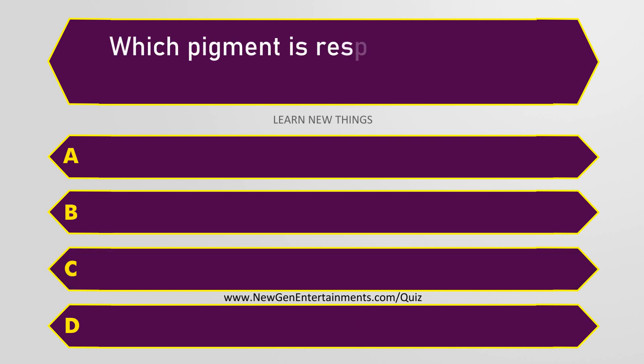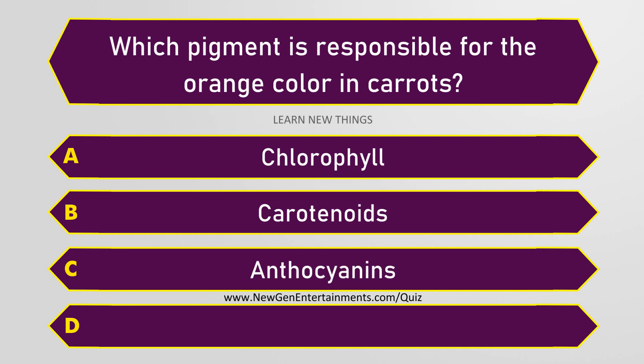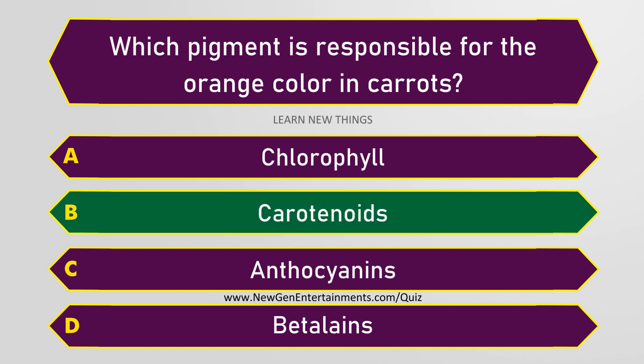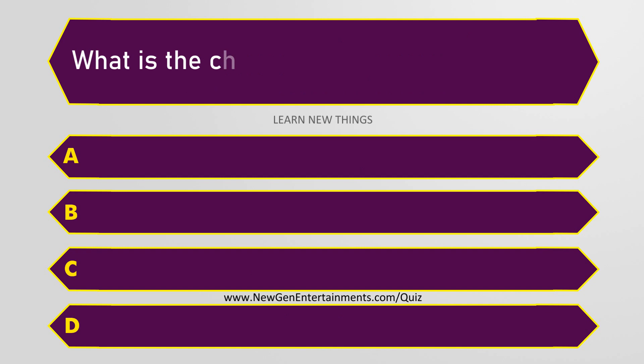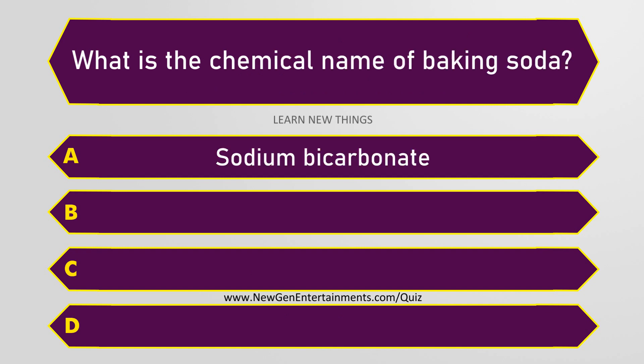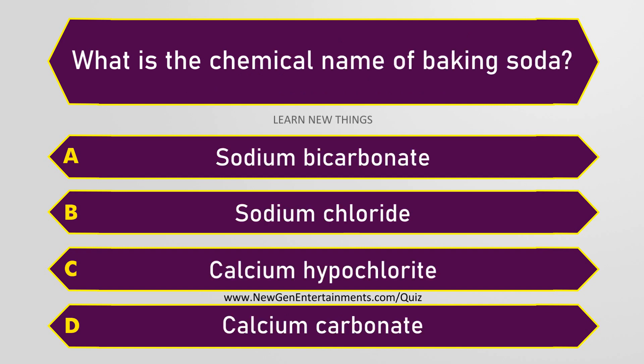Which pigment is responsible for the orange color in carrots? Carotenoids. What is the chemical name of baking soda? Sodium bicarbonate.